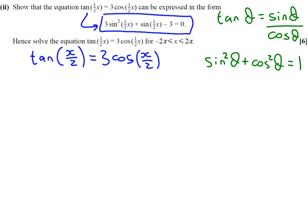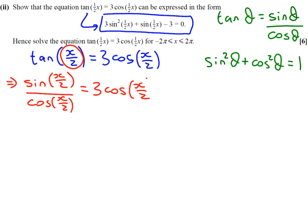The only one we can use at the minute is the one to do with tan. So remember, our angle here is x over 2. So this is the same as sin x over 2 over cos x over 2. And that equals the right hand side, 3 cos x over 2. What we're going to do now is times up by this cos x over 2, which gives us sin x over 2 equals 3 cos squared x over 2.